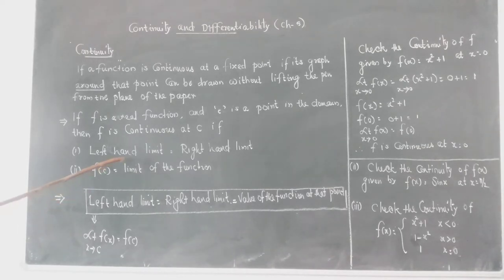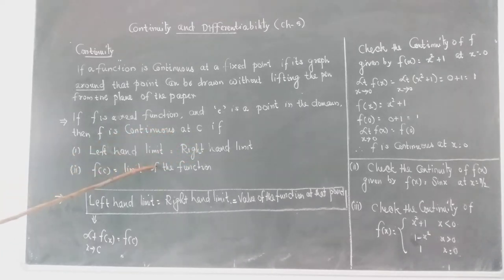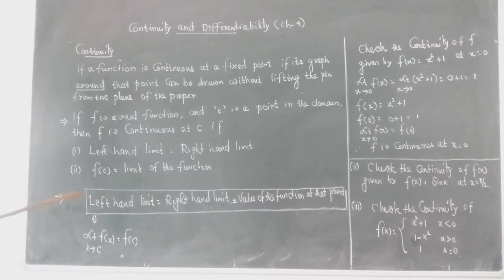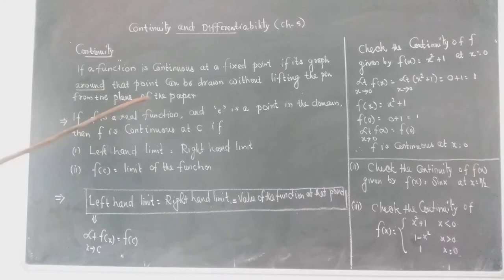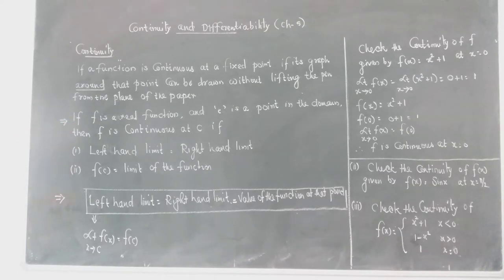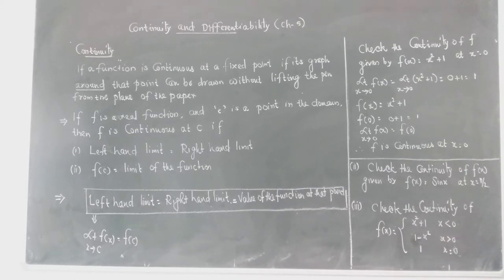The first condition says the left-hand limit and the right-hand limit should be equal. The second condition says this common limit value should be equal to f(c), the value of the function. So the two main concepts are: left-hand limit equals right-hand limit, and the value of the function should be equal to the limit of the function.